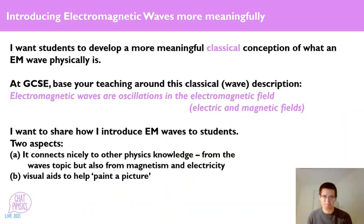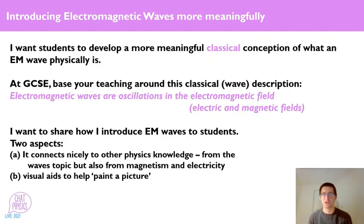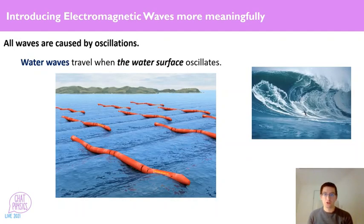So here is my aim: I want students to develop a more meaningful classical conception of what an electromagnetic wave physically is. Look out for two aspects — this explanation connects nicely to other physics knowledge from the waves topic and from magnetism and electricity, and visual aids are quite important for painting that classical picture. What I hang this explanation on is the idea that all waves are caused by oscillations. I think that's fundamental. By the time you're introducing electromagnetic waves, students should be very familiar with that idea.